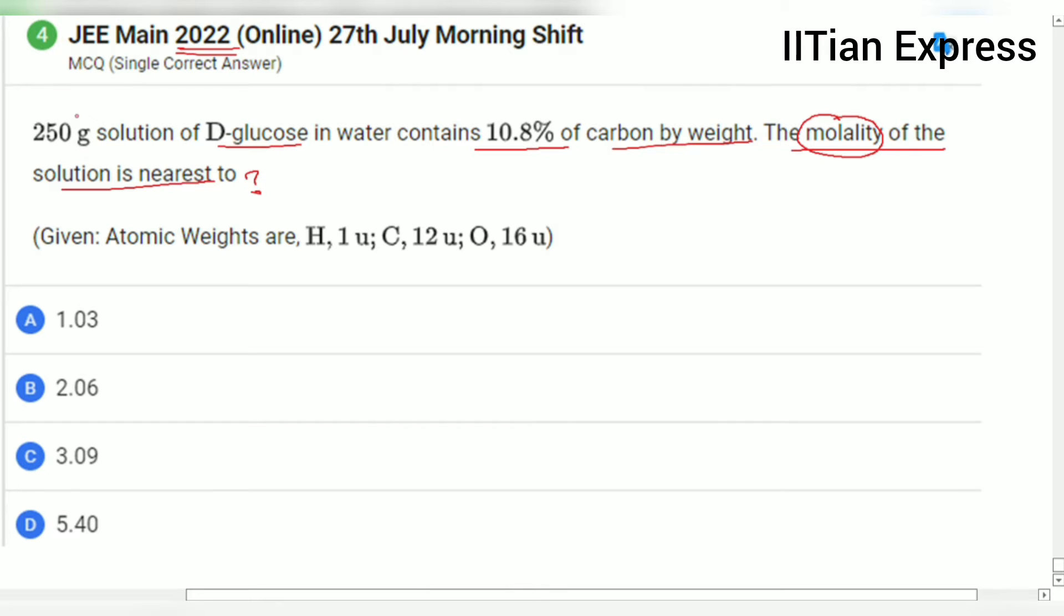It is given that the weight of the glucose in the solution is 250 gram and it is 10.8% of carbon by weight. So what we are going to do now is calculate the weight of the carbon.